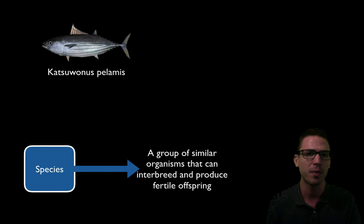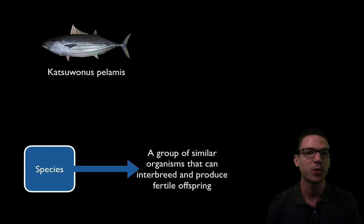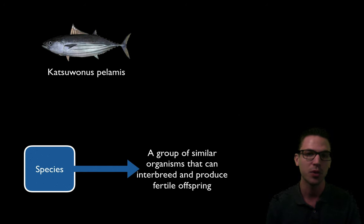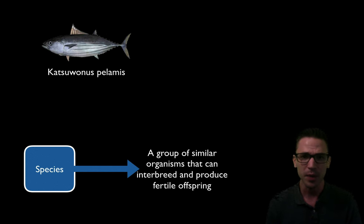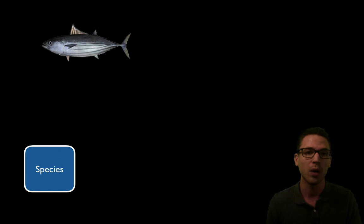An example in the marine environment would be the skipjack tuna, Katsuwonus pelamis. Every single species has a two-part binomial name: the first name tells us the genus and the second tells us the species. For humans it's Homo sapiens; for the skipjack tuna it's Katsuwonus pelamis. Another thing to mention is that every species has a very specific role inside its ecosystem, and that role we call a niche.